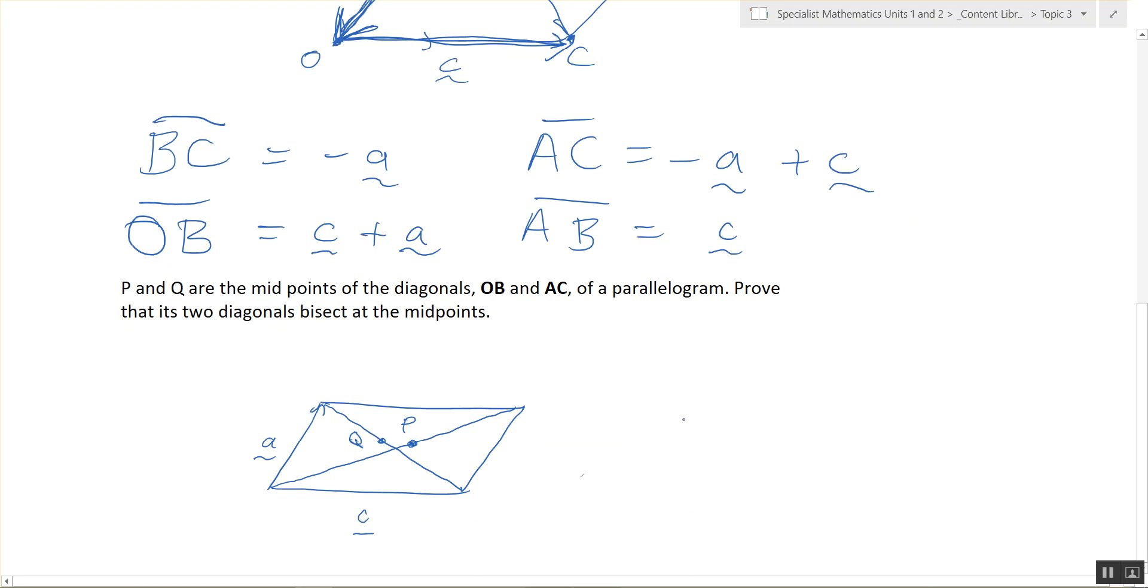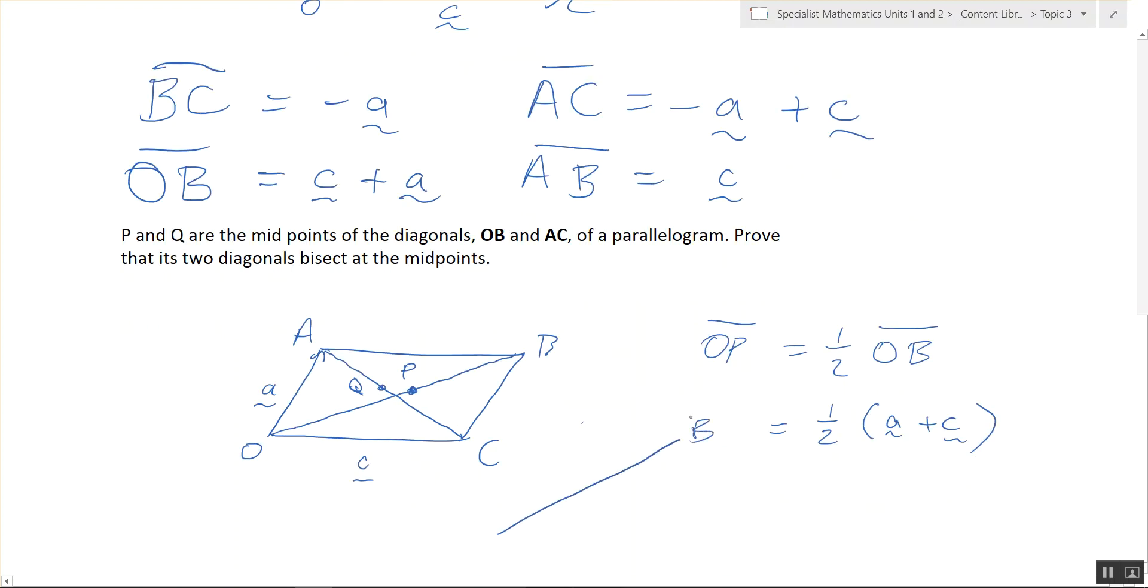OP in terms of vector A and C. Any ideas? OP is half of OB. Does that make sense? And what was OB? We just figured it out. That's what I said. Good job. OP is perfectly in the middle of O and B.